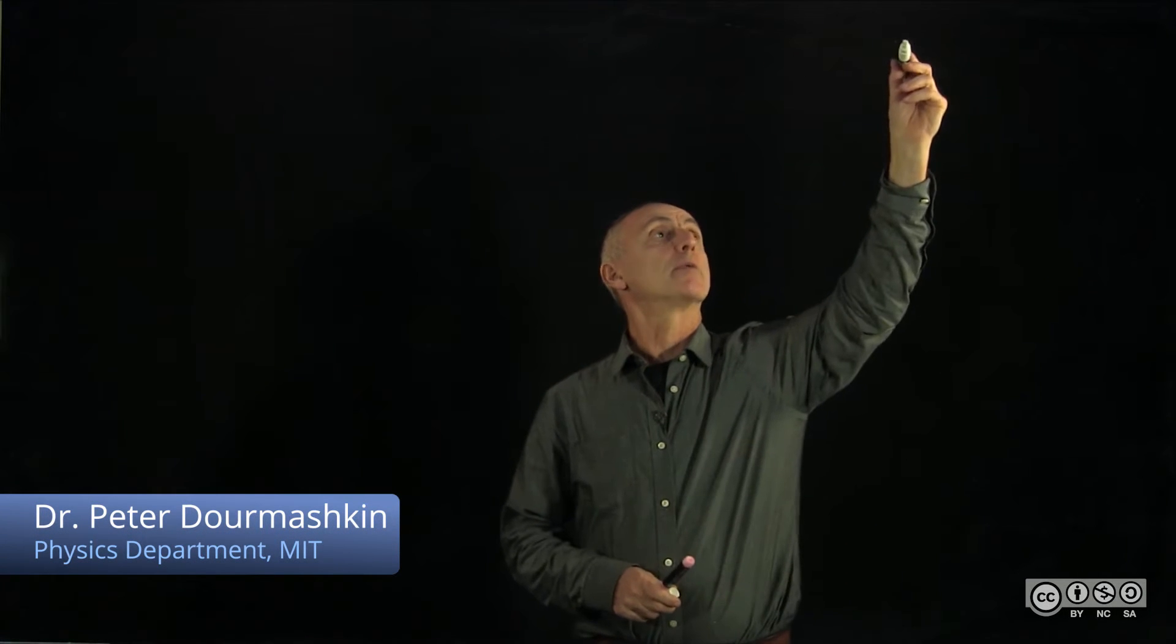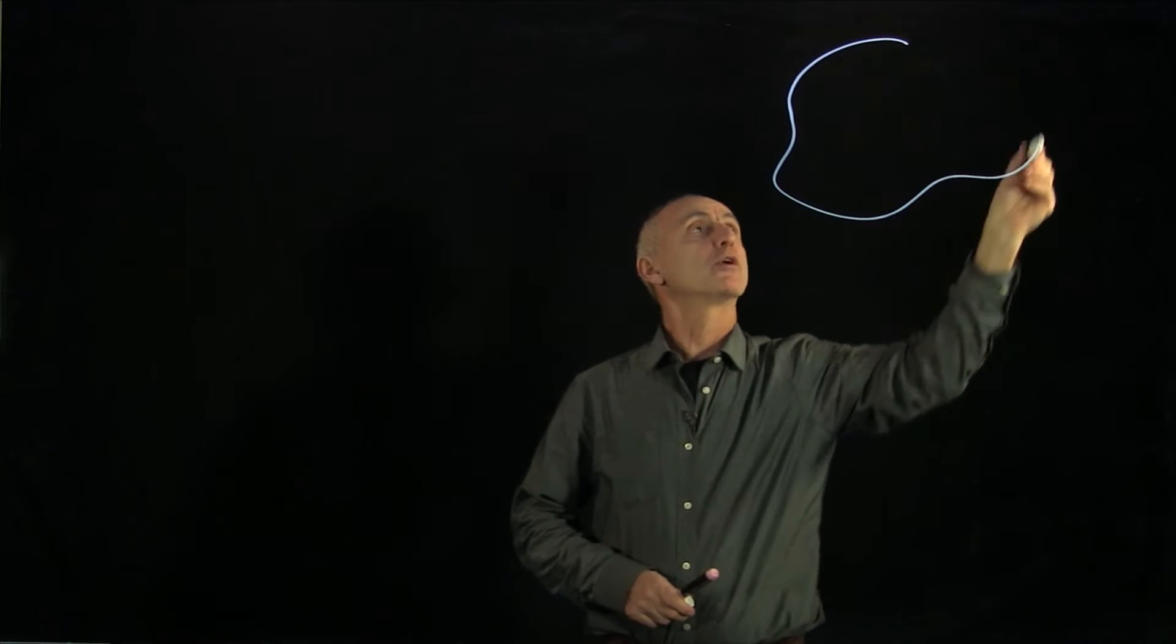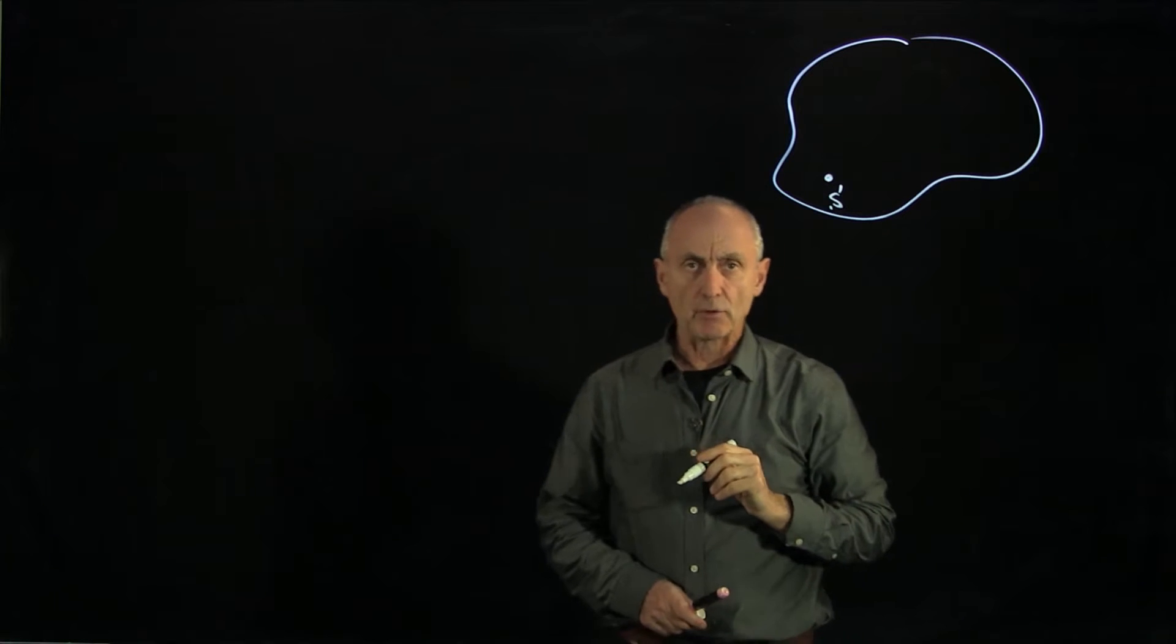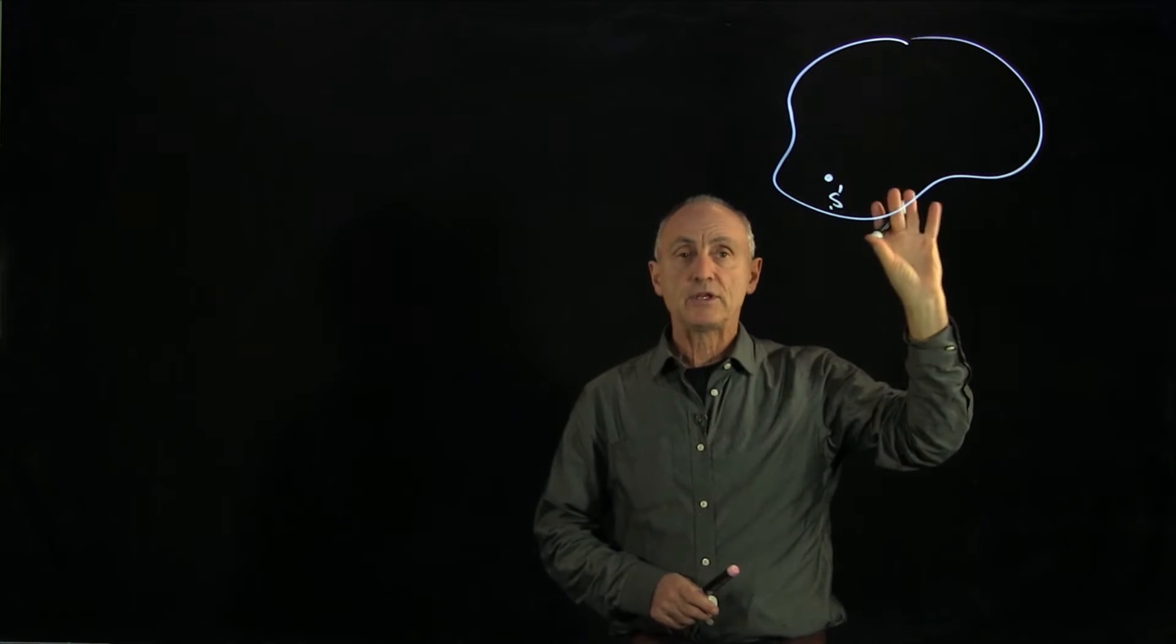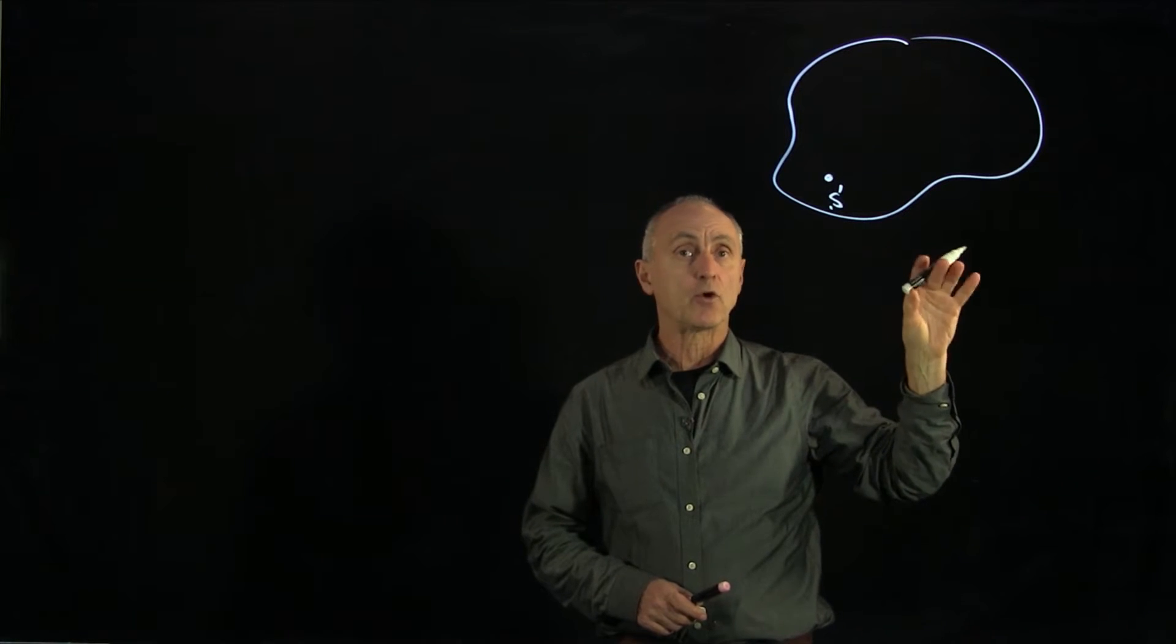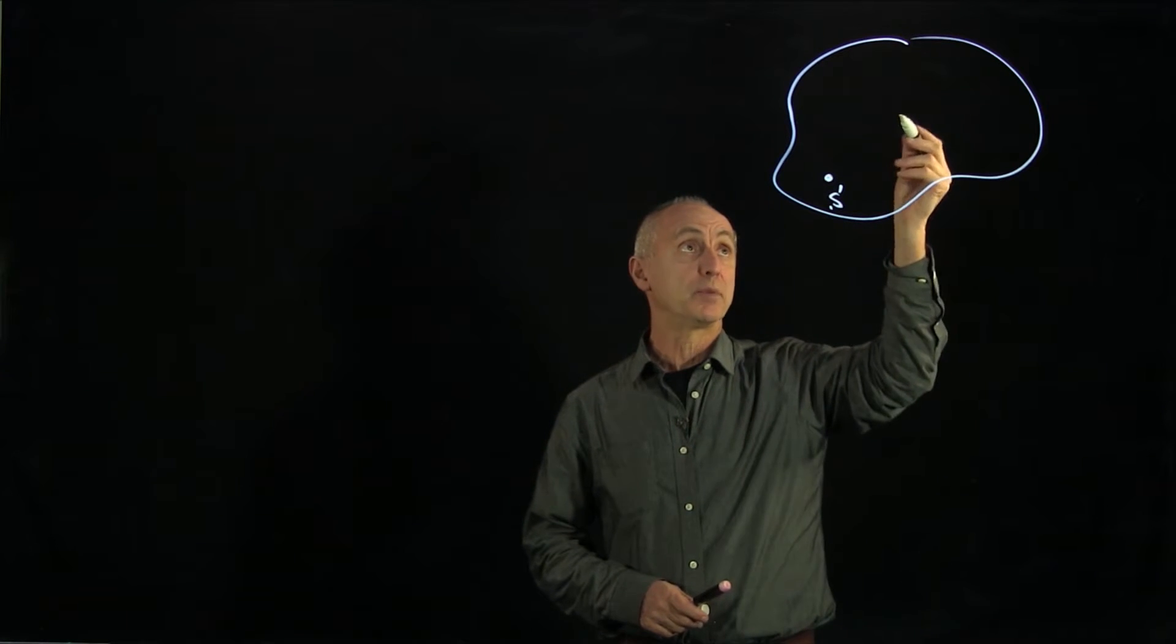We'd like to consider torques on a body. Let's draw an arbitrary body and consider a point S where we're about to calculate the torque. We know that forces on the body can be both internal and external, and we'd like to show that all internal torques will cancel in pairs.